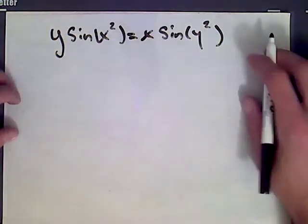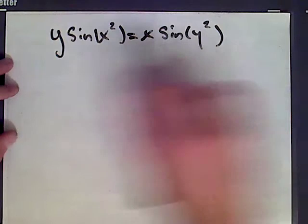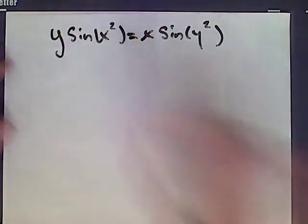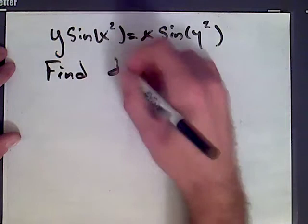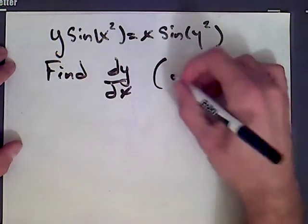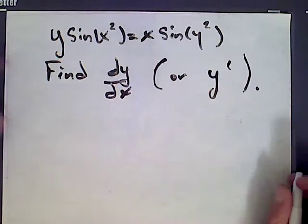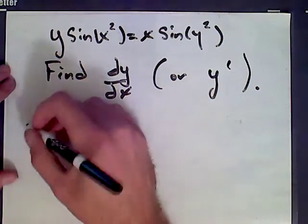Something more complicated is going on. We have the y squared term here inside of sine, and then the y term on this side of the equation. So to find the derivative, we'll find dy/dx — or y prime as I'll sometimes write it. We need to use implicit differentiation. The first step is to differentiate both sides of the equation.